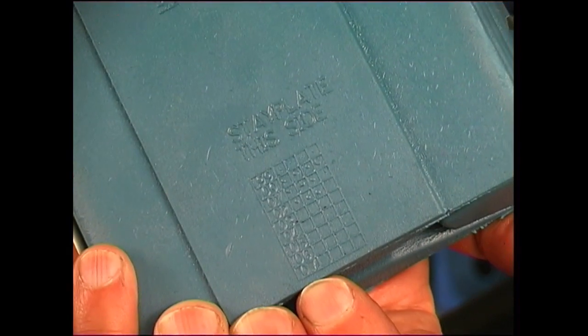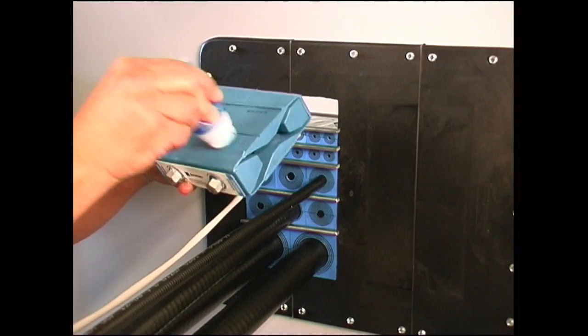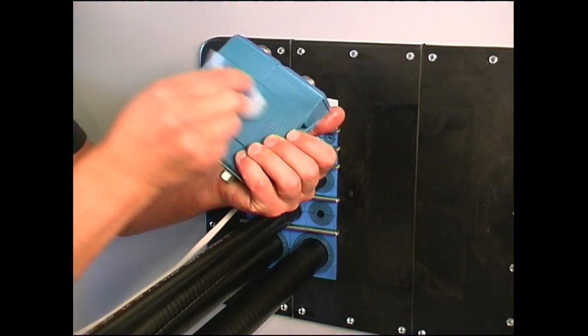Finish the installation with the Roxtec wedge. Make sure the bolts are loose and be sure that the marked side of the wedge is facing the stay plate. Lubricate and insert the wedge.